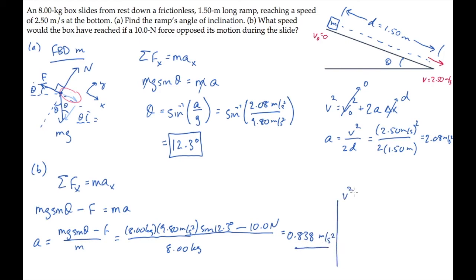Now we can do kinematics again, and find the speed at the bottom. Using the time-independent kinematic equation, the displacement is still d, the initial velocity is still 0, so we can take the square root and substitute values, finding that now the box reaches the slower speed of 1.59 meters per second.